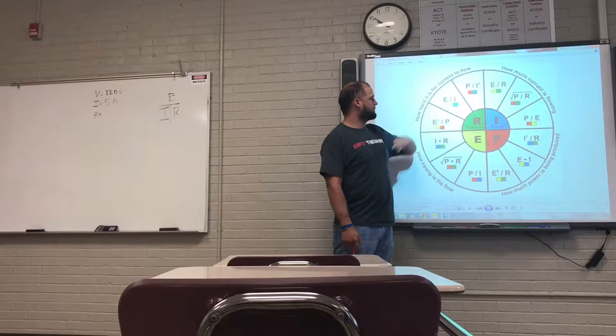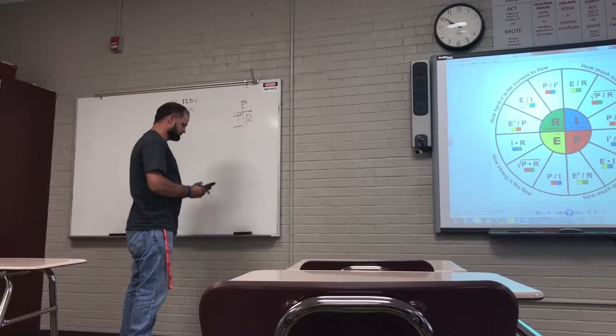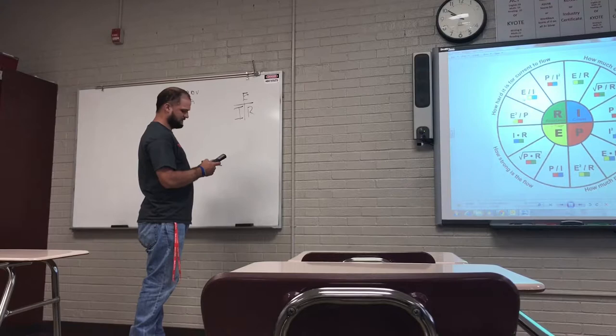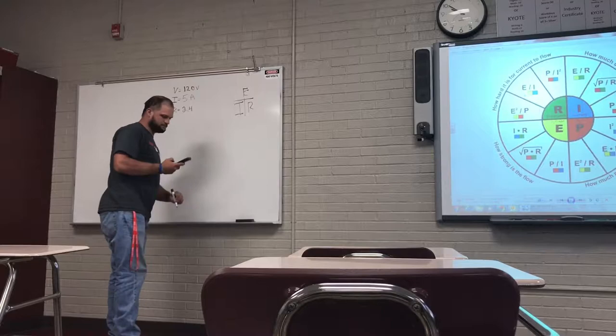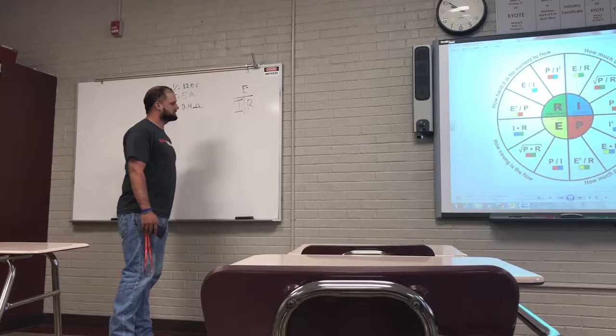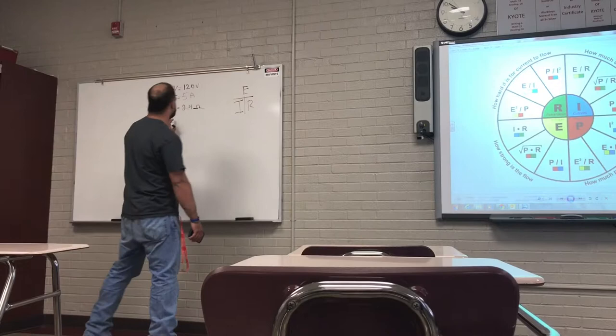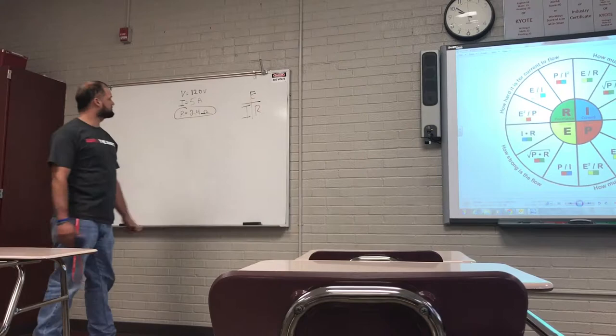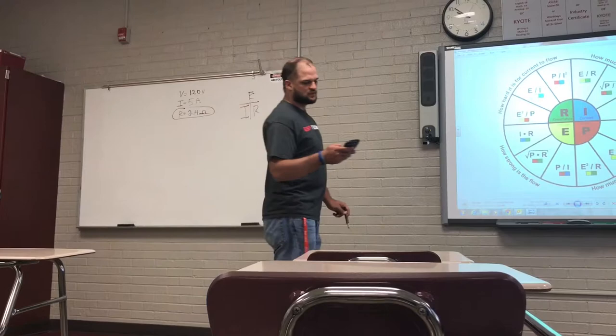So if we get out a calculator and do 120 divided by 5 equals, that will come up to a total of 24 ohms. So resistance in ohms is what we're going by. So the symbol for ohms is an ohm. It's a scientific letter for ohm. So that is how we find out what R is. It's pretty simple. You're just doing 120 divided by 5 that'll equal 24. So we've got resistance done here.